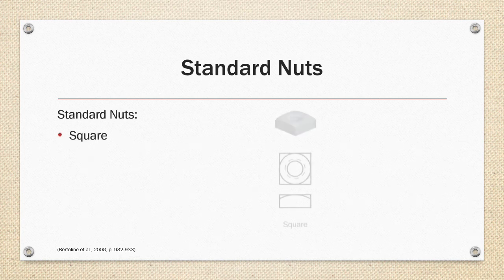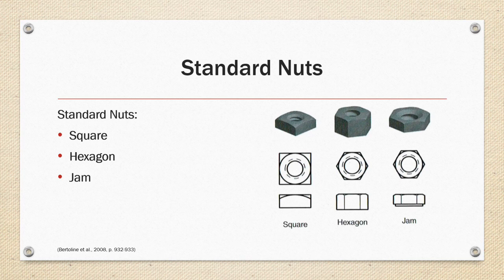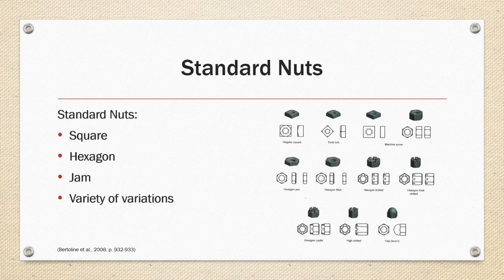Standard nuts. The standard basic nuts are the square nut, the hexagon nut, and a jam nut. The jam nut differs from the hexagon nut because the thread is intentionally machined at a slight angle from the face so that when it is used in conjunction with a standard hexagonal nut, it applies pressure and keeps it from loosening. But there is also a variety of variations. And we will let you peruse the manual in the book, or the Machinery's Handbook is an excellent resource for the specifications for standard nuts.